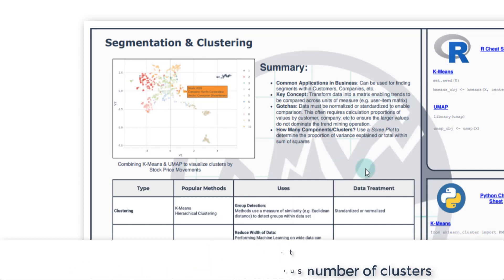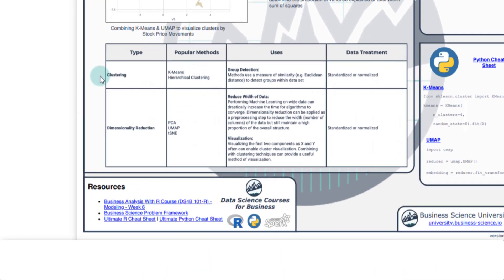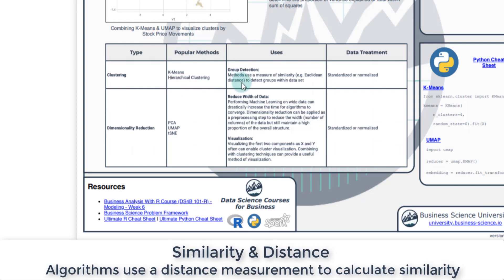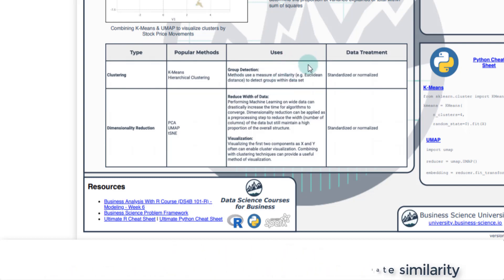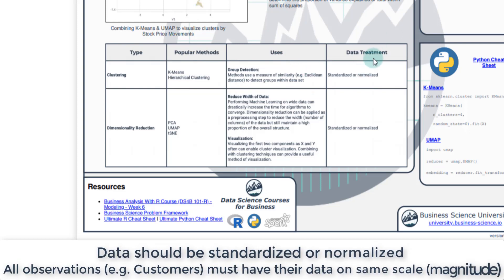There are some popular methods out there. For clustering and segmenting there are two different ways and we'll actually combine two of these. There's clustering, which we'll be going over - k-means, which in my opinion is one of the better ones. There's also hierarchical clustering and several other types, but these are the two main groups or two most popular methods. What these do is they use a distance measurement, usually Euclidean distance, which measures the similarity - think of it like a correlation. Basically looking for which customers are similar or correlated to each other. One of the gotchas we already talked about is that data needs to be standardized or normalized.